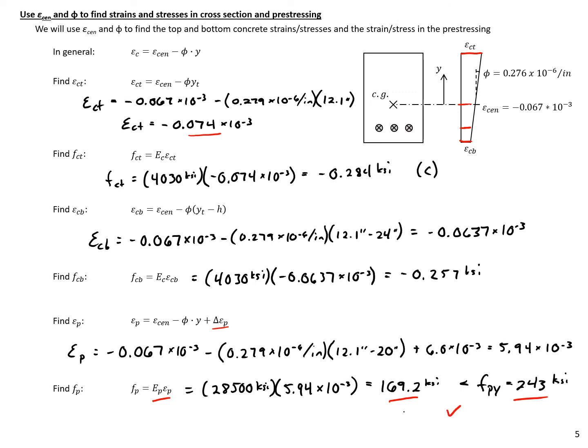That concludes this example. We've used the strain compatibility approach to find the stress in our prestressing and the stresses in the top and bottom fibers of our concrete section.